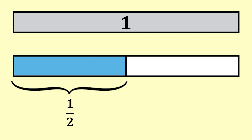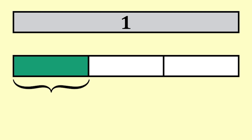One out of two equal parts is one over two or one half. One out of three equal parts is one over three or one third.